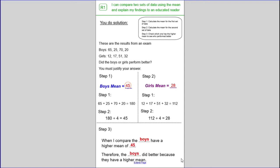Here's the solutions. Make sure that you self-assess your work. So as you can see, the boys' mean here is 45. We found it by adding up all the numbers and then dividing by 4 as there are 4 numbers for the boys. For the girls, the mean is equal to 28. And then we found the mean by adding up all the numbers and then dividing by 4 once again as there are 4 numbers for the girls. Finally, we can see that when we compare, the boys have a higher mean of 45 because we've got 45 against 28 and clearly 45 is higher. And therefore, the boys did better because they have a higher mean. And don't forget to justify your answers.